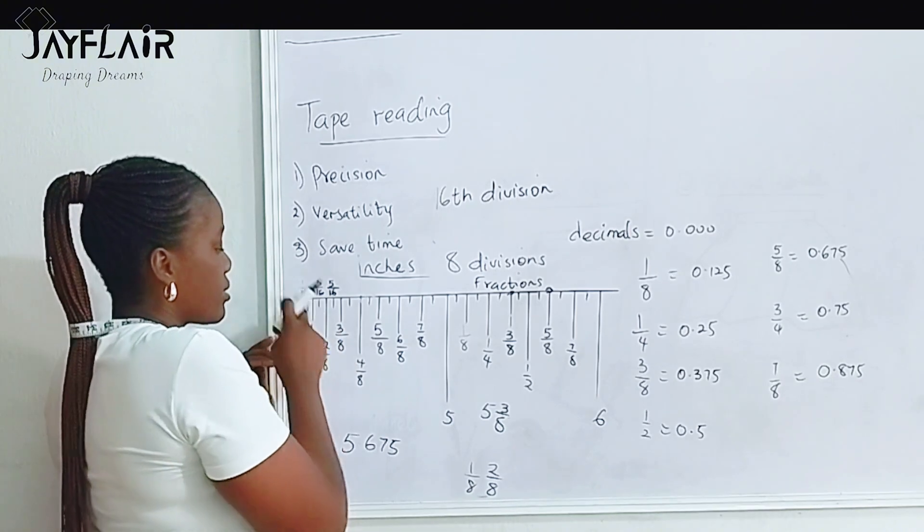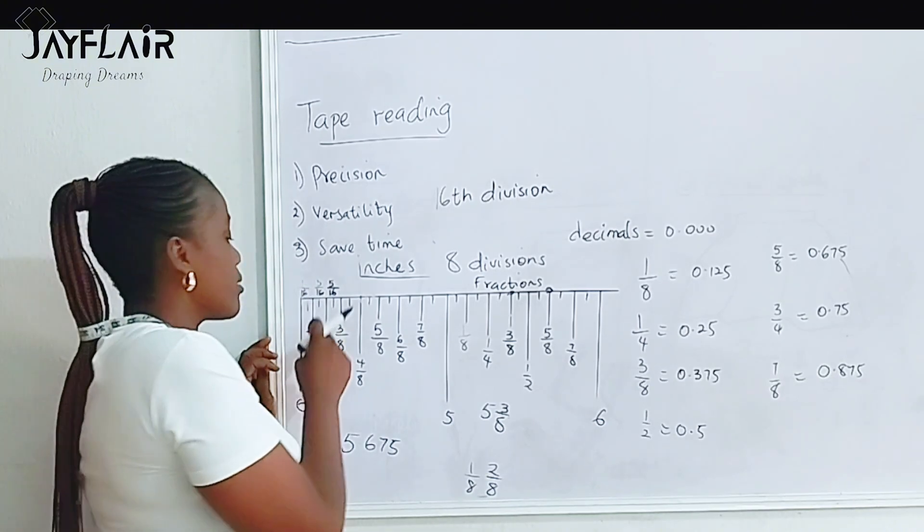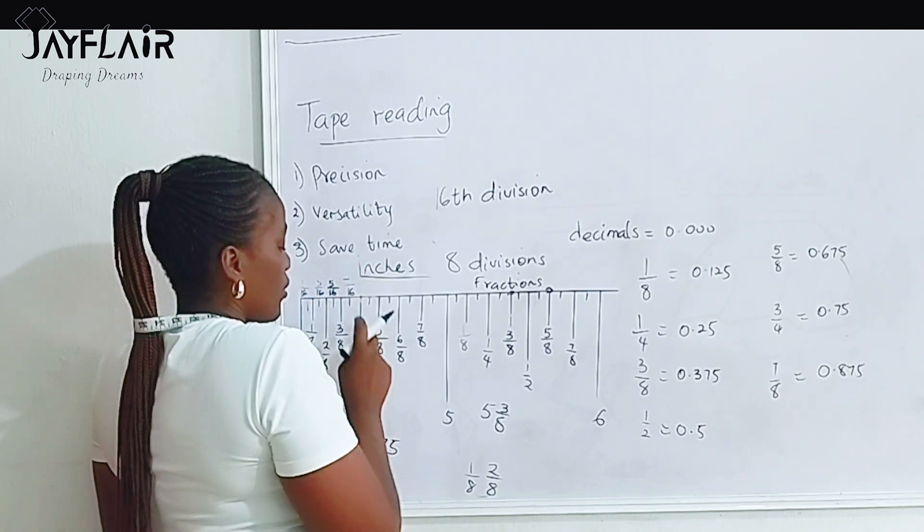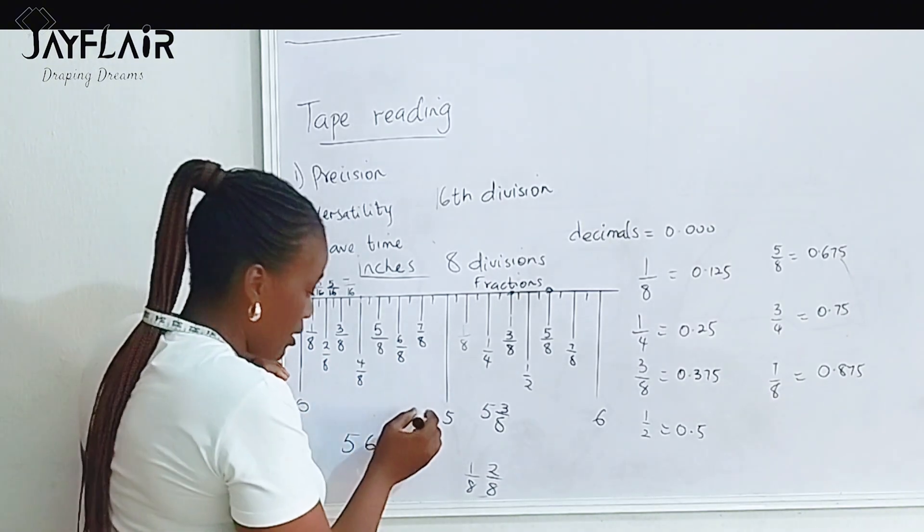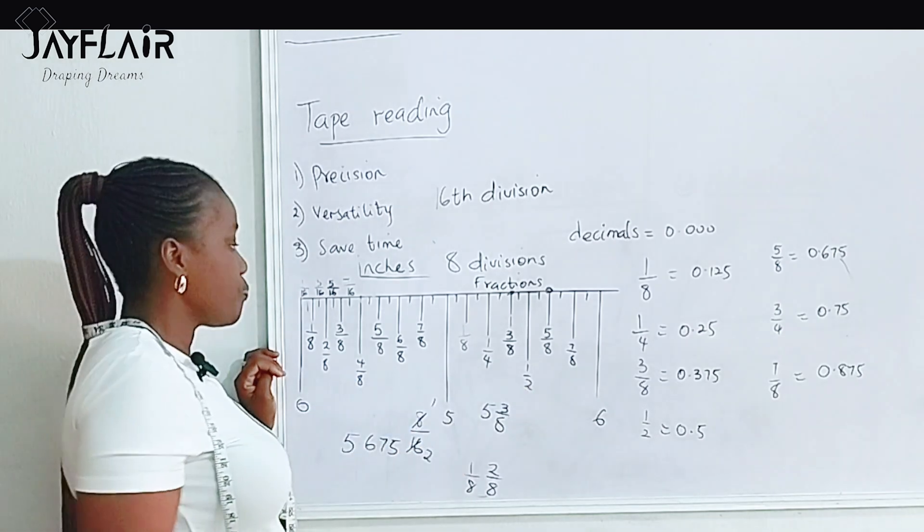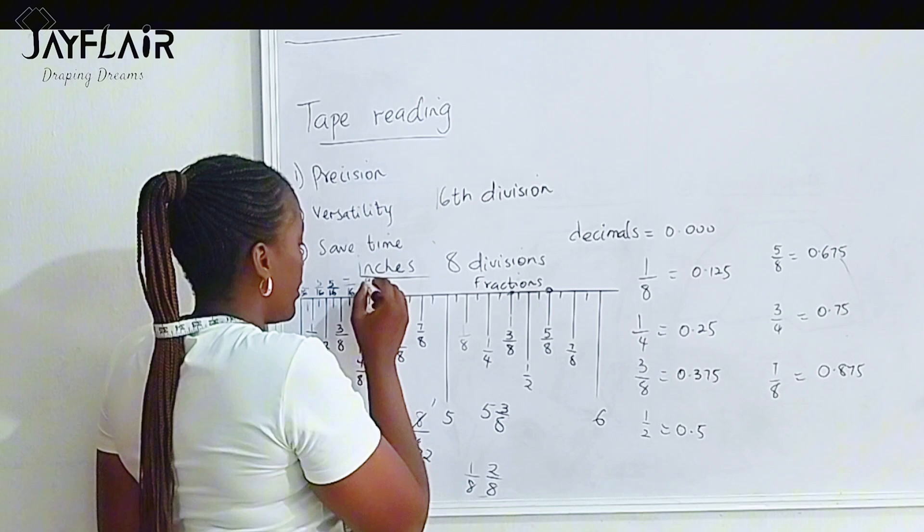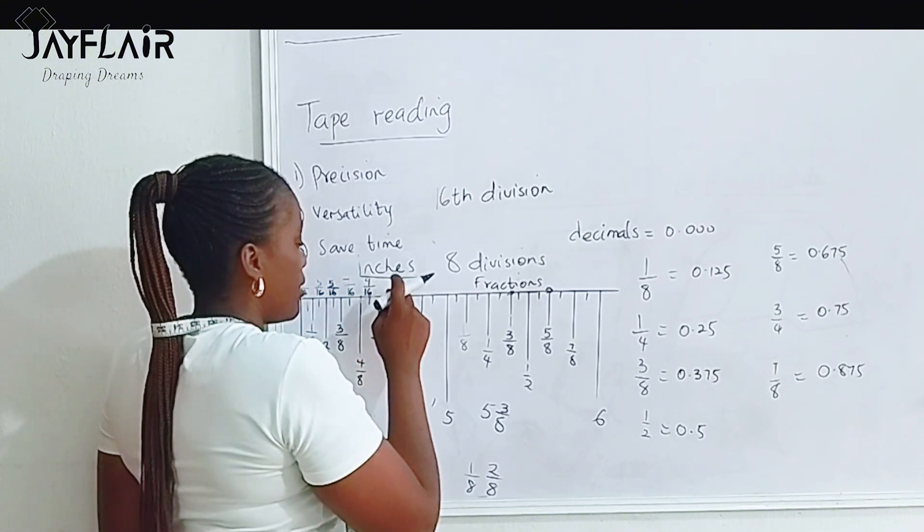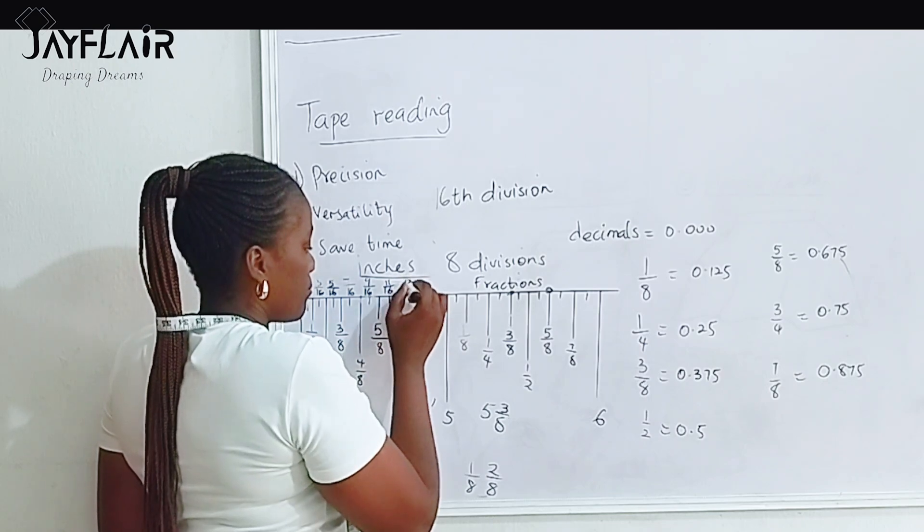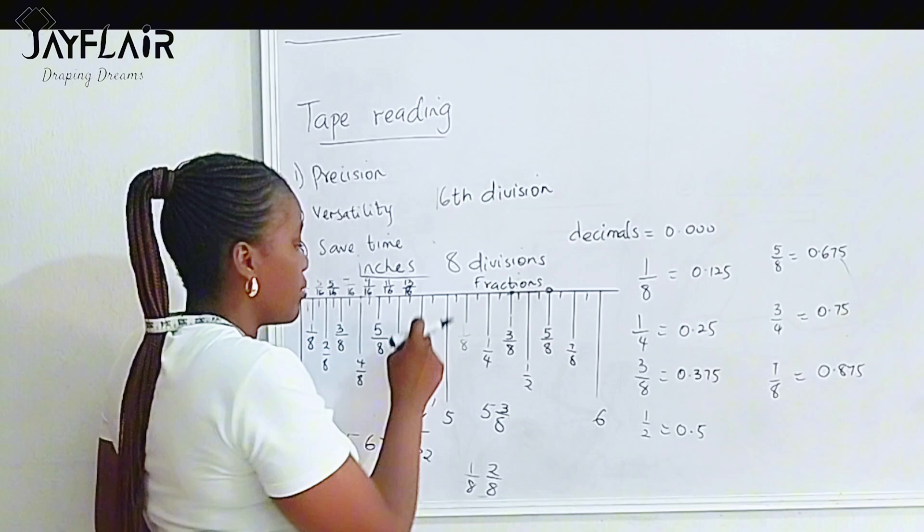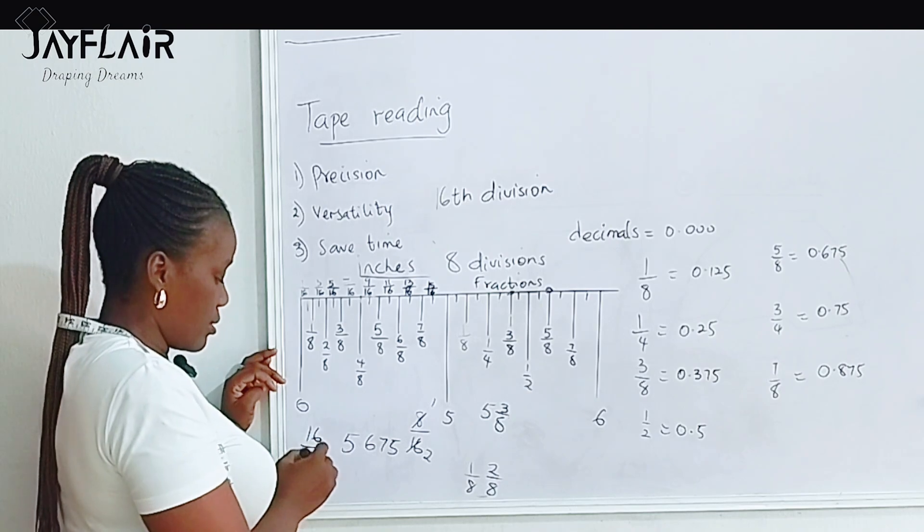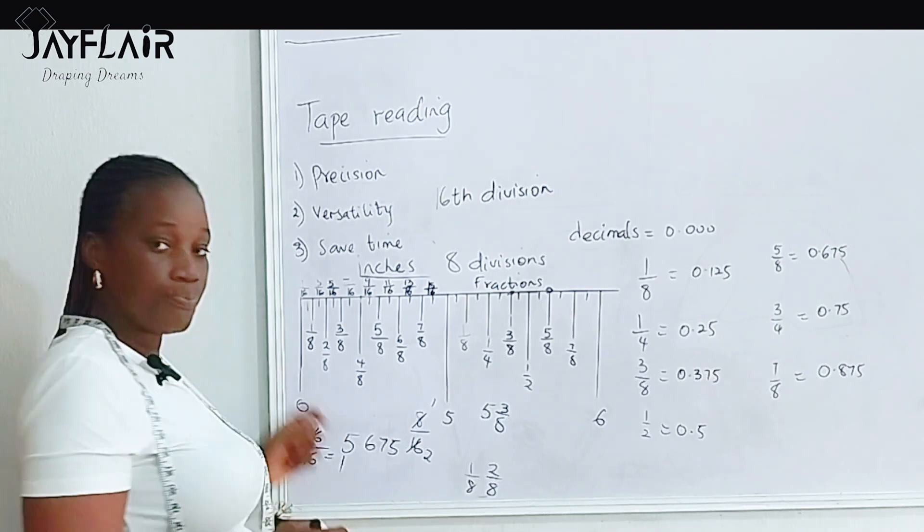So I'm just going to mark it: 1/16, 2/16 which is 1/8, 3/16, 4/16, 5/16, 6/16, 7/16, 8/16. When you divide 8 over 16 further, this is 1 and this is 2, you get 1 over 2. So we have 8/16, 9/16, 10/16, 11/16, 12/16, 13/16, 14/16, 15/16, and then 16/16. When you cancel, you have 1.